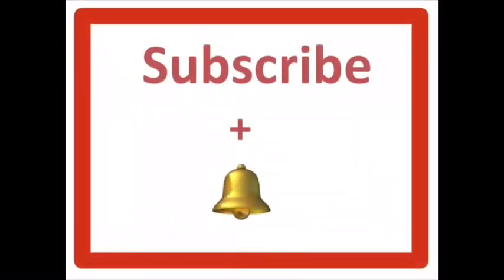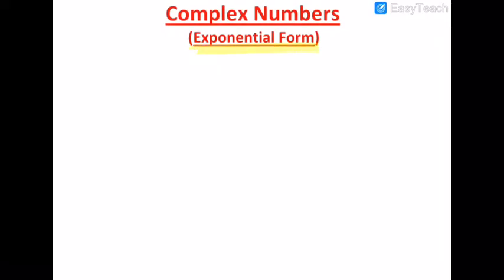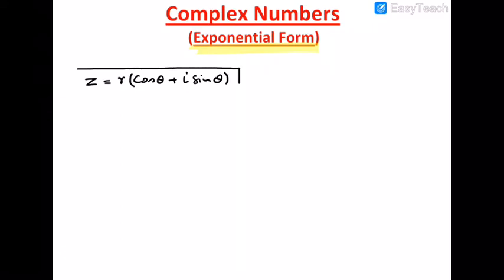Today in complex numbers we will be exploring the exponential form of complex numbers. As we already know, the polar form of a complex number is z equals r times (cos θ + i sin θ).